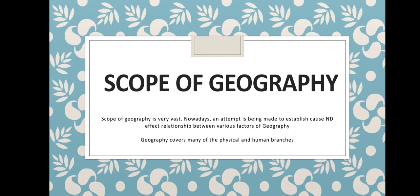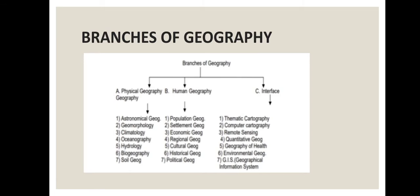Nowadays an attempt is being made to establish cause and effect relationships between various factors of geography, because the scope of geography is really vast — really colossal, really massive. Geography covers many physical and human branches. There are three branches of geography: the first is physical geography, the second is human geography, and the third is interface geography. These three branches each have further seven sub-branches.